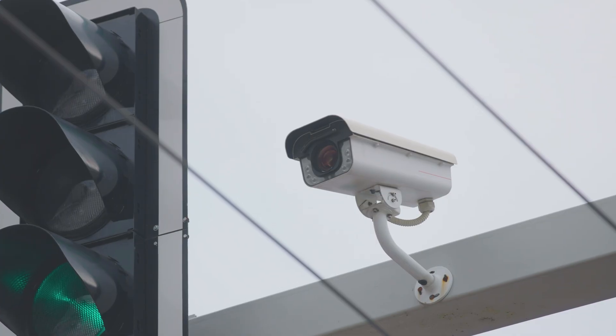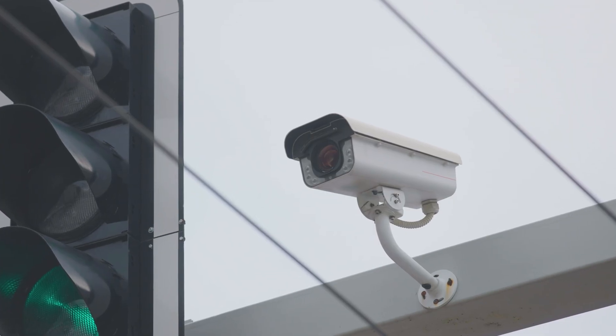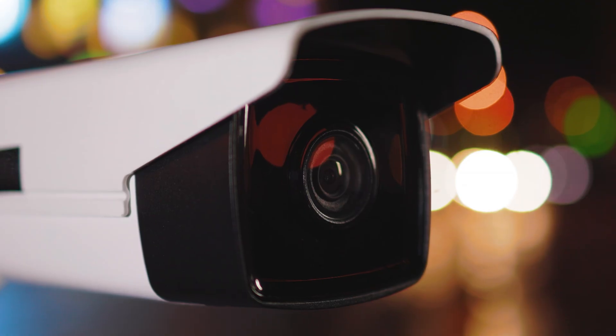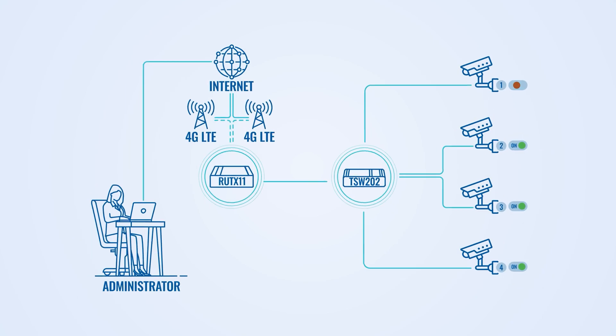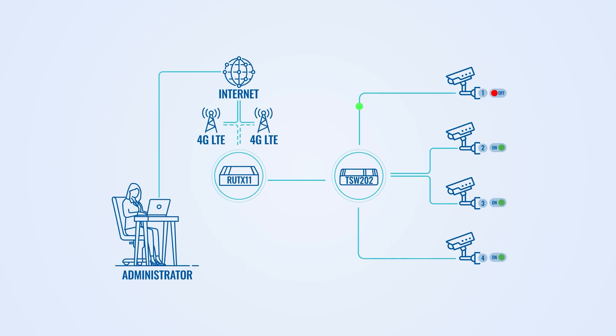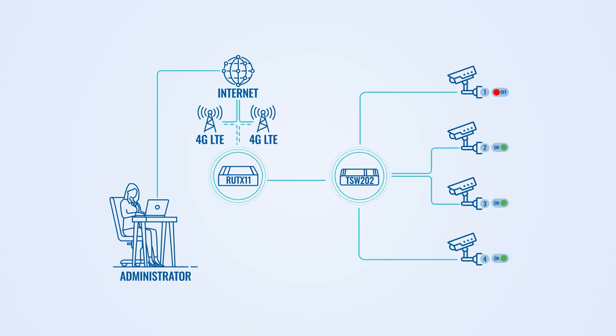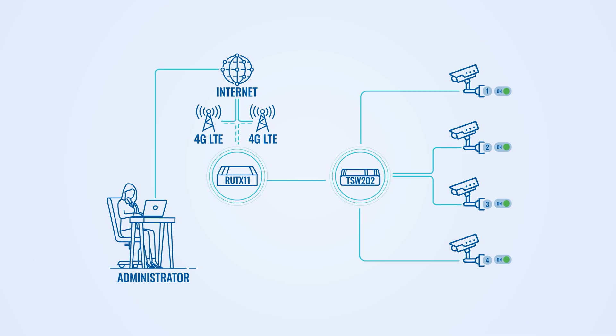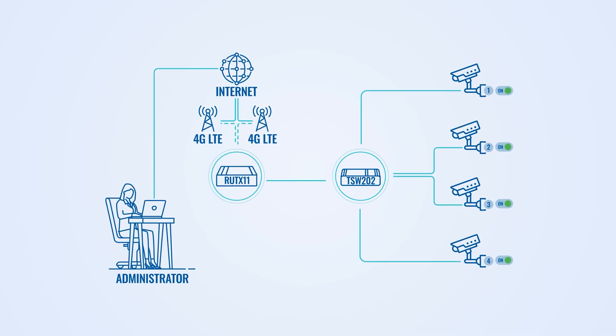Let's look at some examples. For example, an IP camera installed in a remote or hard-to-reach location stops sending video feed due to software or hardware glitches. The first option is for our network administrator to remotely power cycle the PoE port to reboot the camera, restoring its functionality without the need for physical access.